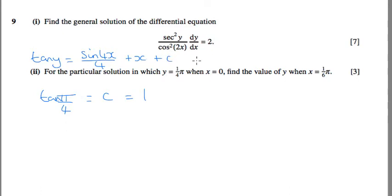We're going to have a 1 here. And we're then going to substitute pi over 6 in, so tan of y is going to be the sin of 4 pi over 6, or 2 pi over 3, over 4, plus pi over 6, plus 1.